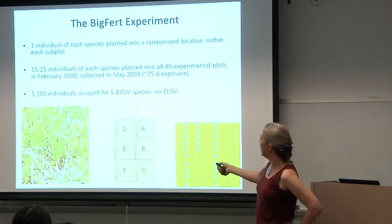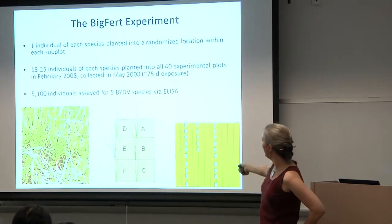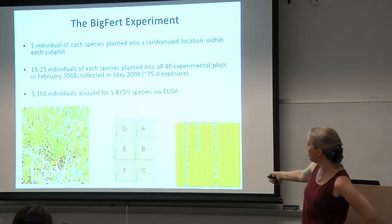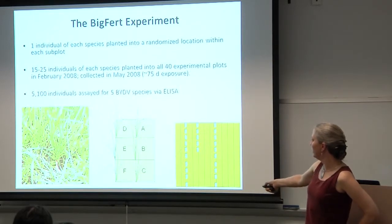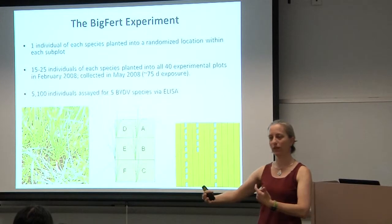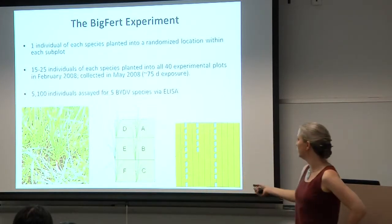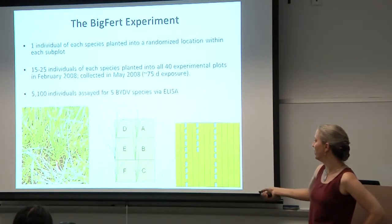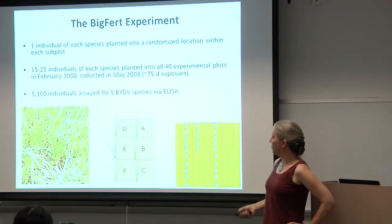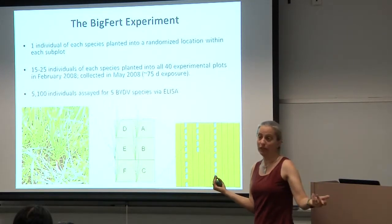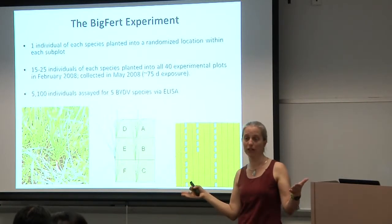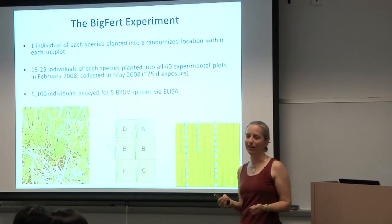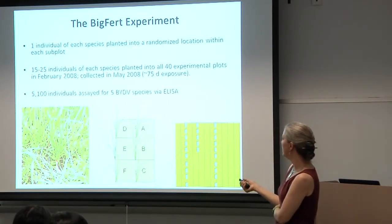We planted them with one individual of each species into a subplot within the larger 40 by 40 meter block along transects. Each of the six species was planted in each location, randomized relative to the others, into a subplot. We allowed them to be exposed to the environment — aphid arrival, pathogen transmission could happen across about a 75-day period, approximately the growing season in that region. We collected them in May of 2008.